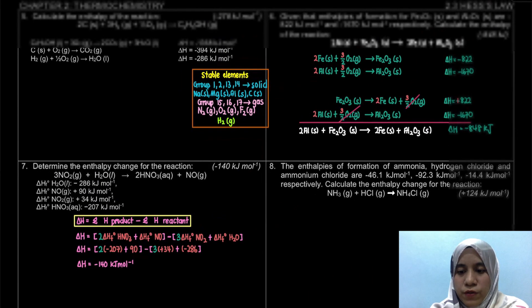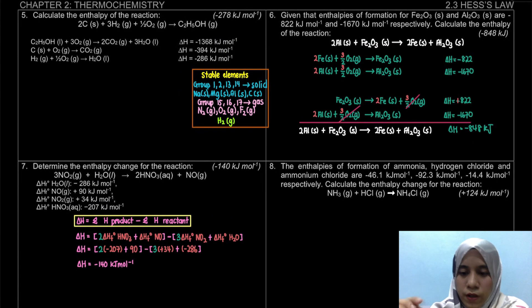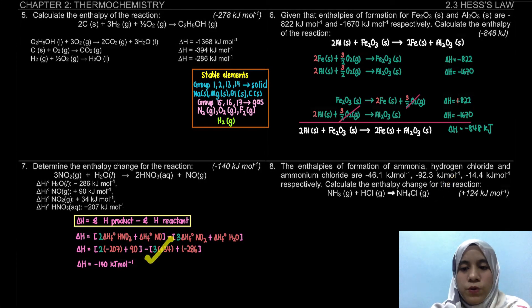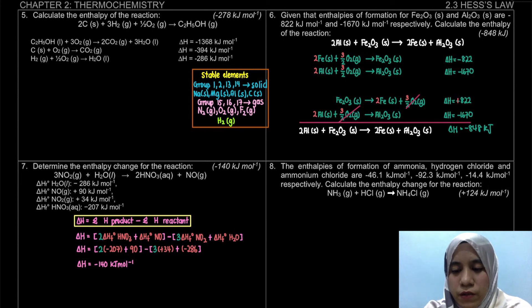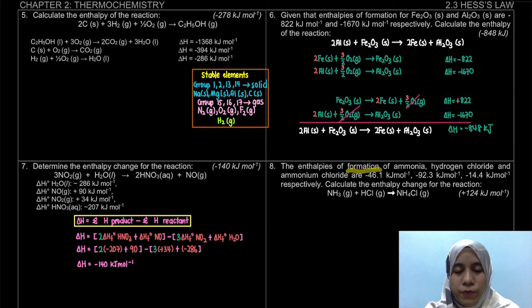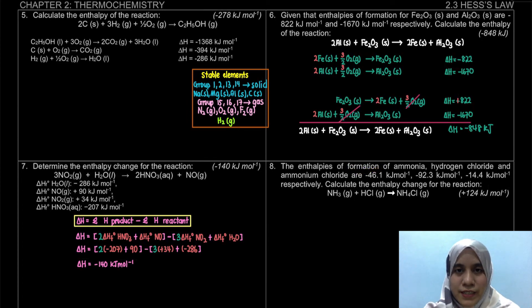For question 8, try it yourself using either the direct formula, the algebraic method, or the energy cycle method — since all information given is also enthalpy of formation. That's it for our Hess's Law calculation. Thank you.